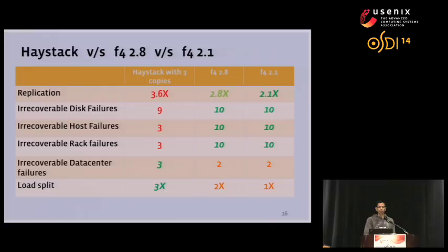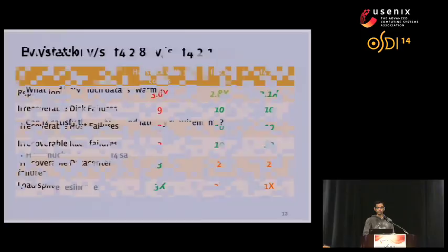That completes the design part of F4. Here is a quick comparison of the three systems we have seen so far. Haystack, F4 2.8, and F4 2.1. So clearly, F4 does very well in terms of space usage and handling most of the failures, such as disk, host, and rack failures. The two things that it does not do as well in are data center failures. So, for example, in Haystack, in order for a failure to be irrecoverable, we'll have to lose three data centers, whereas in the F4 scheme, only two data center losses makes the data irrecoverable. However, in practice, this is a good enough failure guarantee because data center failures are extremely rare. The second thing is load. So, because Haystack keeps three copies of the data, obviously the load balancing properties will be better there. But in the evaluation section, we'll show why, even though the load balancing is not as good as Haystack, F4 is still able to handle the load, primarily because the kind of data that it stores is warm, where load is not that big of a concern.